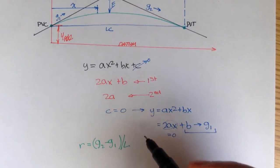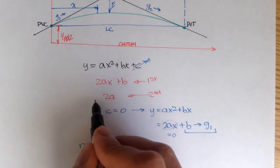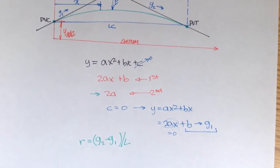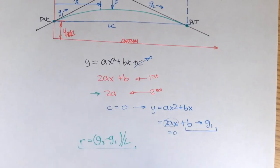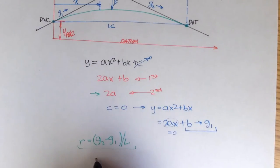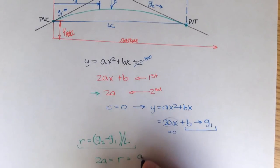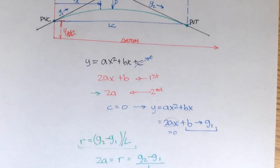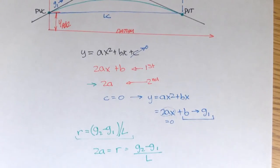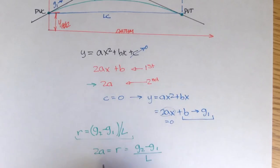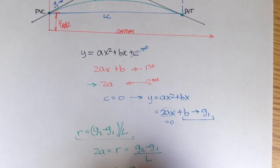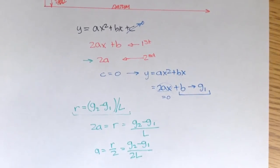We said that the rate of change of slope for a parabolic equation is given as 2A. And we have a given R, which is also the rate of change of slope, equal to the difference in grades divided by the length. So we can set these two equations equal: 2A equals R, which equals G2 minus G1 over length. Now we have an equation for A — if we divide by 2, A equals R over 2, or G2 minus G1 times 1 over 2L.